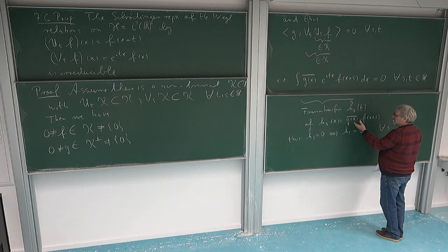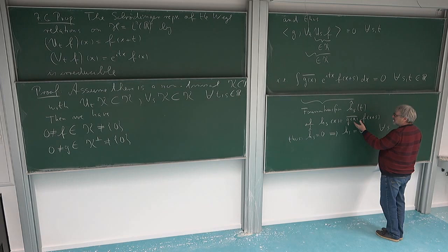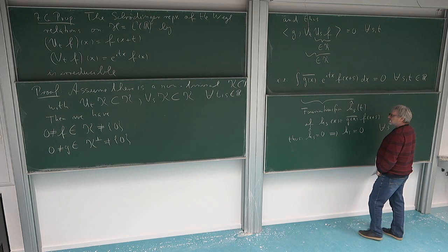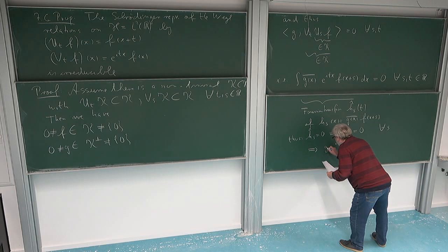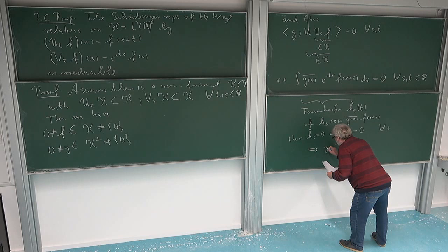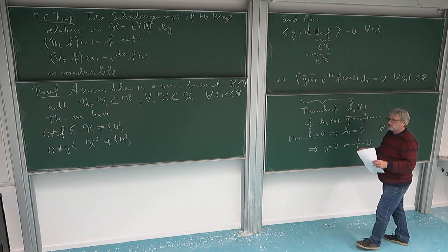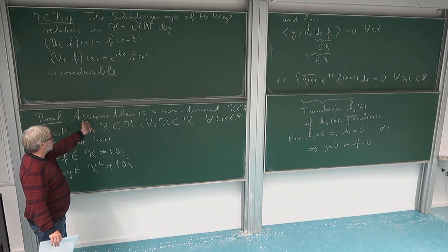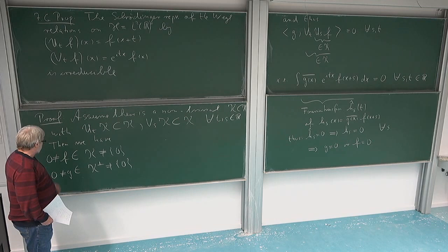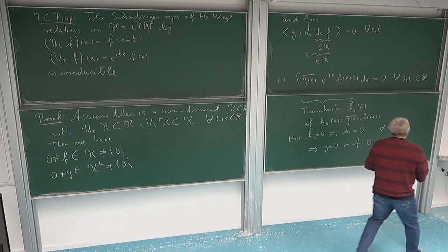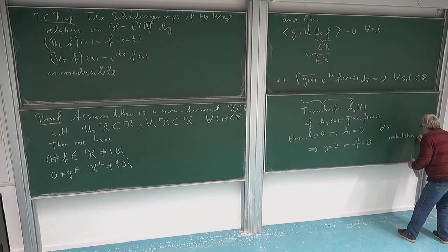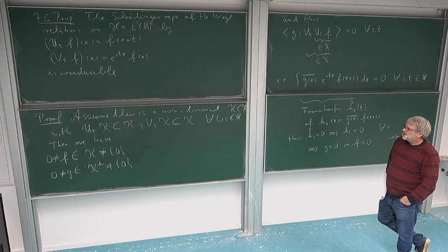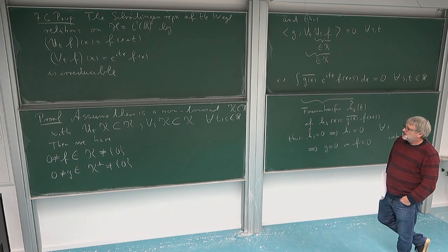Now we have this function being pointwise zero for all shifts s. Multiplying two functions pointwise and shifting one of them by any amount gives zero — this can only happen if one of the two functions is identically zero. So either g = 0 or f = 0. But this is a contradiction to our assumption that both f and g are non-zero, which came from having a non-trivial invariant subspace. So we have a contradiction.